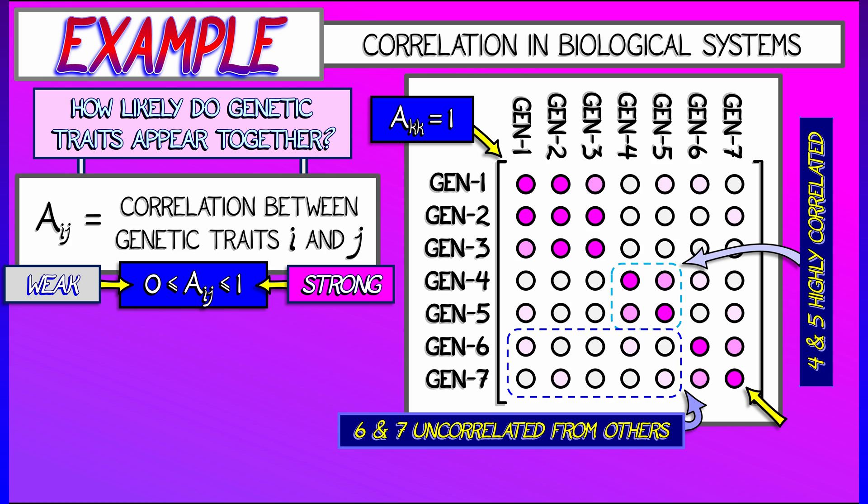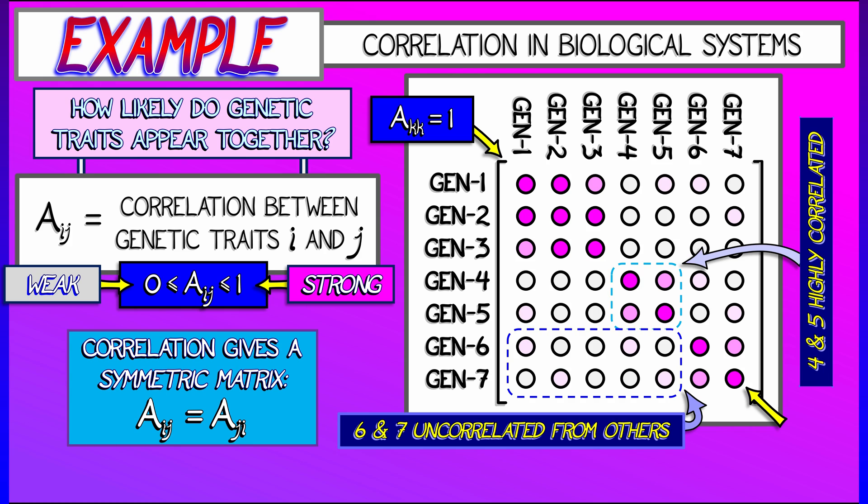Now, these correlation matrices are somewhat special in that they are symmetric. If traits i and j are correlated, then traits j and i are correlated.